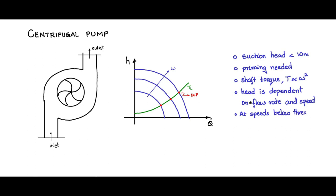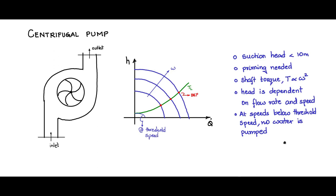At speeds below a threshold, no water is pumped. The static characteristics drawn below this threshold speed all go into friction loss — no water will be pumped. This particular characteristic is at the threshold speed.